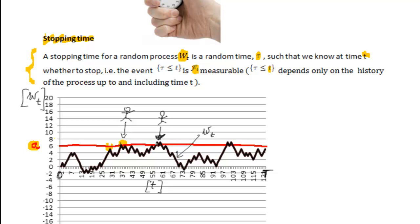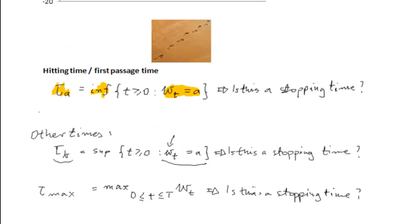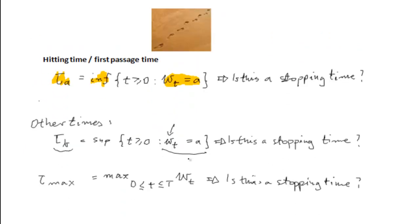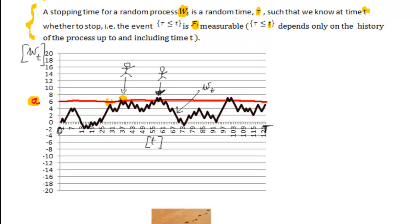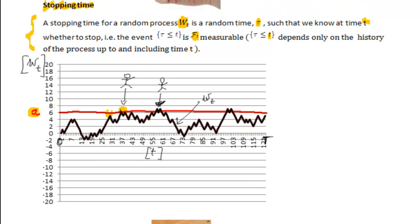Therefore, we can conclude that tau B is not a stopping time, because we don't have enough information available at time t here regarding whether this is the last time we actually hit level A. It may turn out that our process hits level A, or it may turn out that it doesn't.